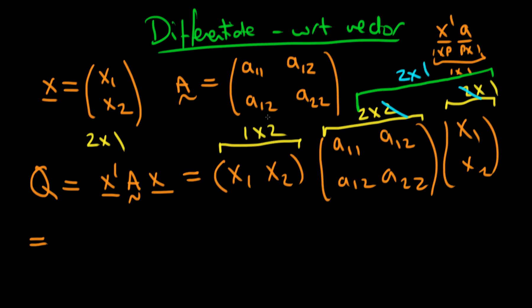And then when I multiply that in turn by a 1 by 2 row vector, then the twos are going to cancel and I'm just going to be left overall with a 1 by 1 result. So actually, Q is itself a scalar.